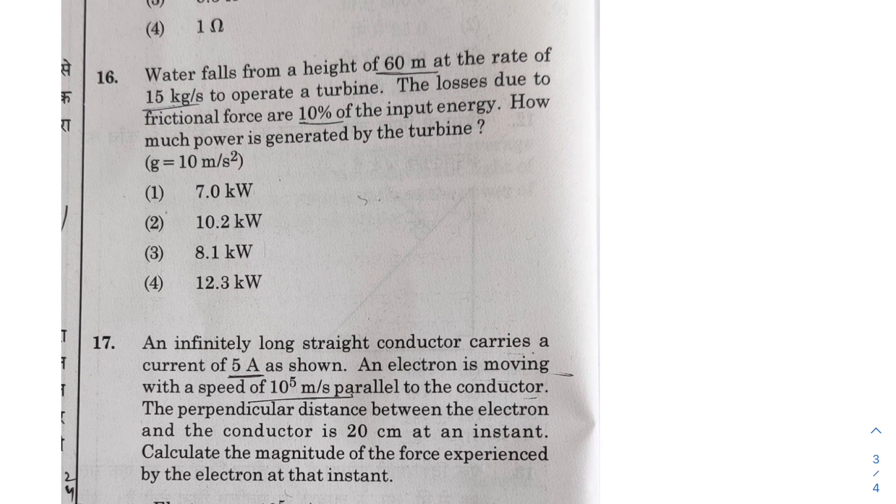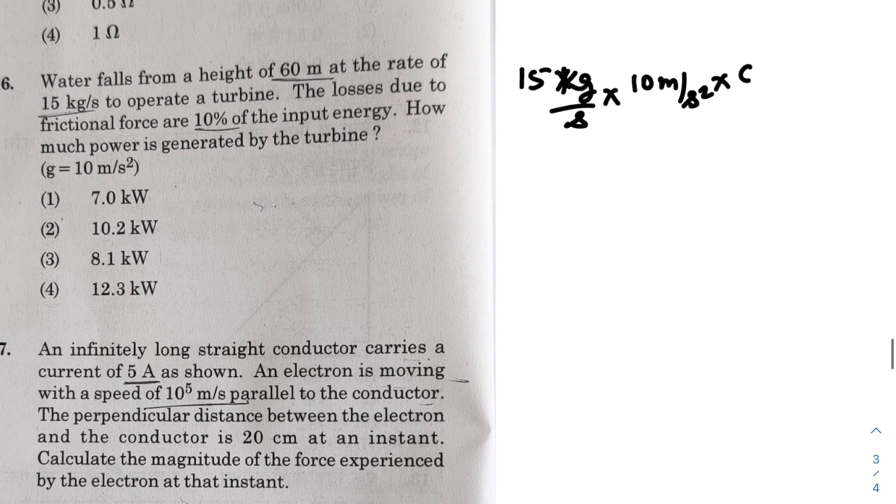Next, water falls from a height of 60 meters at the rate of 15 kg per second to operate a turbine. The losses due to frictional forces are 10 percent of the input energy. How much power is generated by the turbine? So the power that is coming is 15 kg per second, and g is 10 meter per second square, and it is 60 meters.